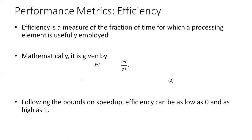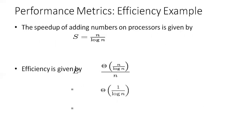Efficiency can be as low as 0 and as high as 1. For the example of adding n numbers on n processing elements, the speedup is S = O(n / log n). Substituting into E = S / P, we get efficiency E = O(n log n / n) = O(1 / log n). That is the efficiency of adding n numbers on n processing elements.